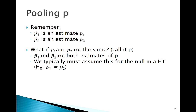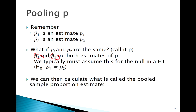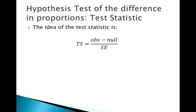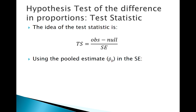We can use the idea that if the null is true, p1-hat and p2-hat are both estimates of the same thing to come up with what's called our pooled proportion. Rather than calculating p1-hat and p2-hat separately, we use them both as estimates of the same thing. That is how we solve our standard error issue for a two-sample test for p. The test statistic uses that pooled estimate in the standard error, with p-hat pooled appearing in the standard error formula.